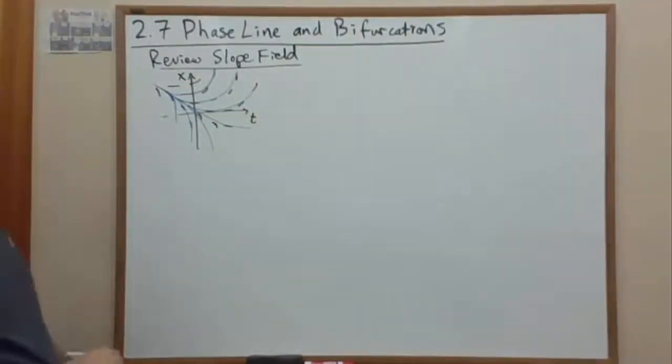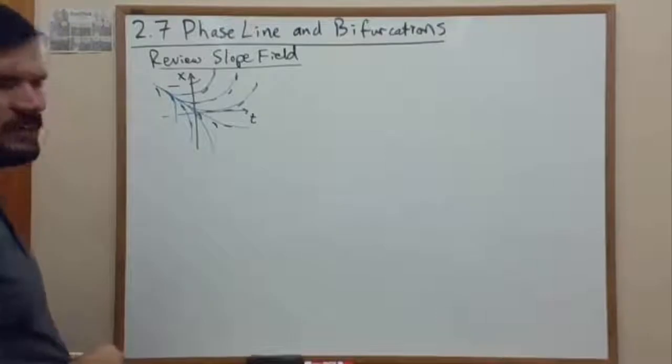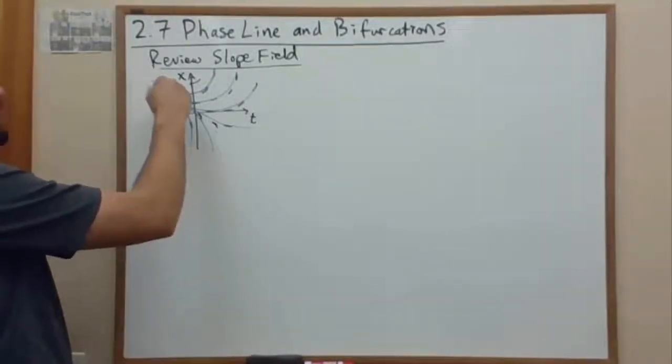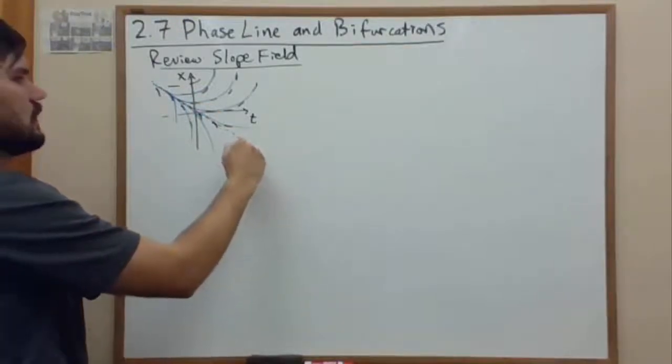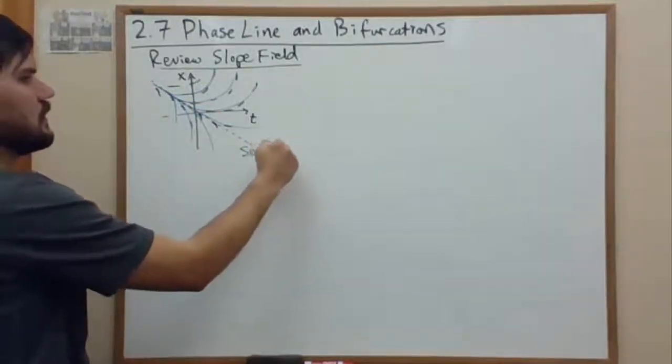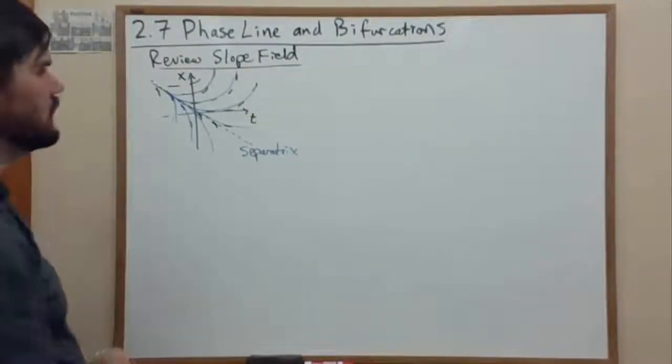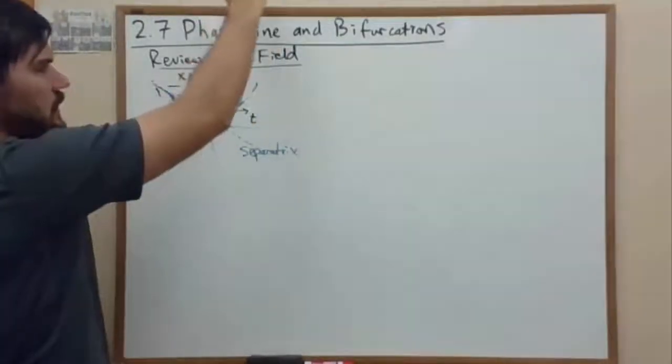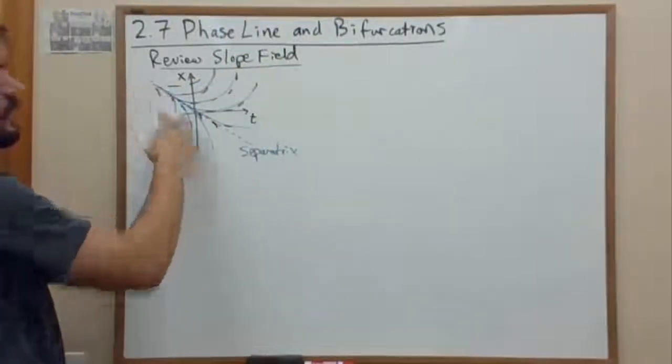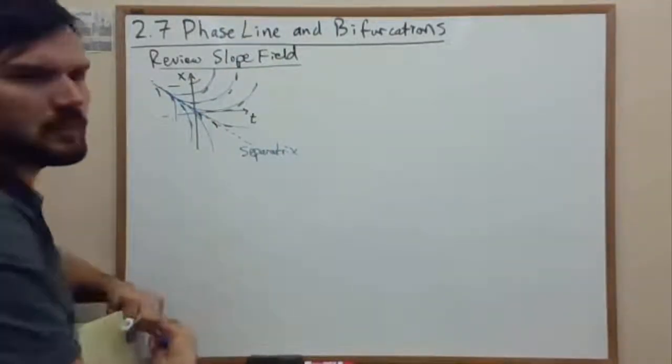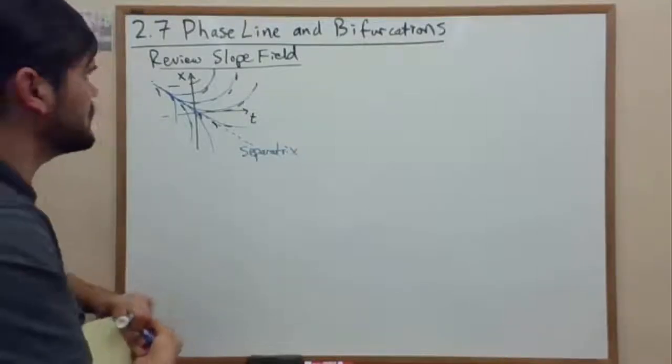So what we have here is an example of a separatrix. There is some curve that is separating two kinds of behavior. You have one behavior that's going up and out when the behavior is going down. So that's an example of a separatrix curve in space.